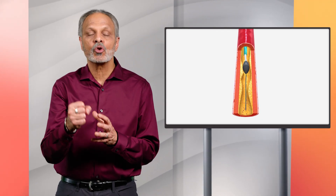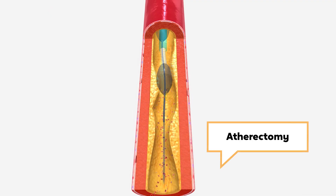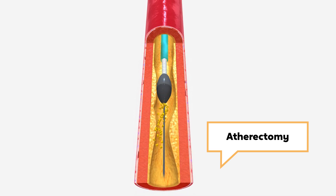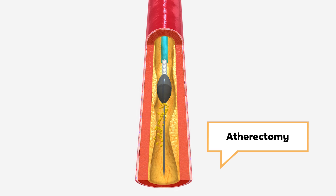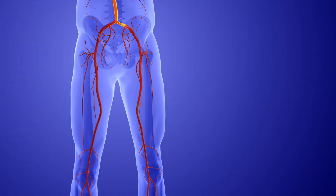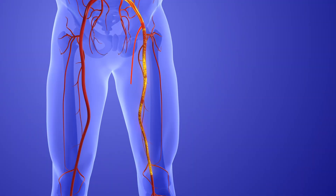An atherectomy is a procedure to remove plaque from the artery. Similar to angioplasty, a catheter is inserted into the blocked artery. The catheter has a sharp blade or cutter on the end that's used to cut, collect, and remove the plaque from the blood vessel. If a long portion of artery in your leg is completely blocked and you're having severe symptoms, bypass surgery may be needed. Doctors will take a vein from another part of your body and use it to bypass and reroute blood flow around the closed artery.